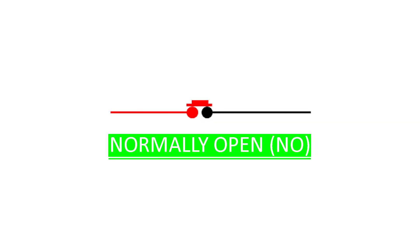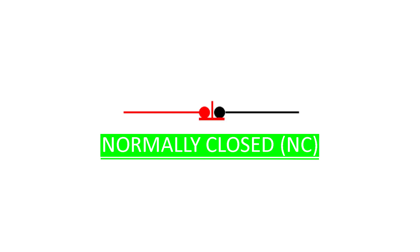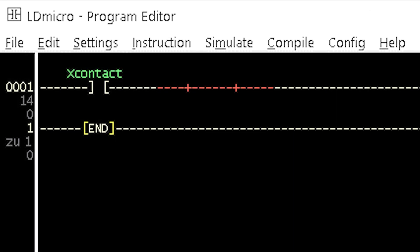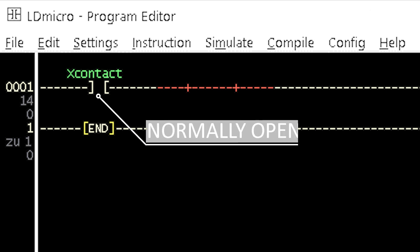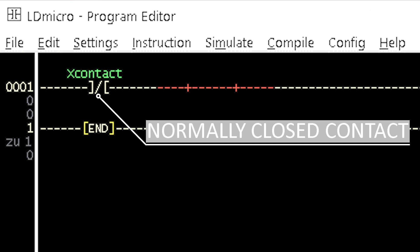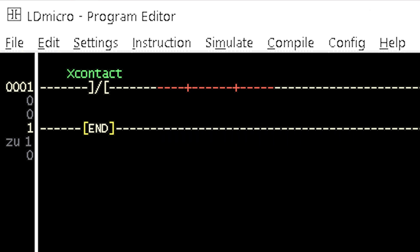A contact is a software type of push-button switch which allows the flow of electrical current through it when pushed. The initial state of the switch before being pushed is considered as normally open. There are other types of push-button switch that allow the flow of electrical current through them until a push occurs to interrupt the flow. Such switches are termed normally closed. The push-button switch operation applies to the contact instruction element of LDmicro. The graphical representation of a normally open contact and that of a normally closed contact differ, with the normally closed contact inverting the signal from an input source.